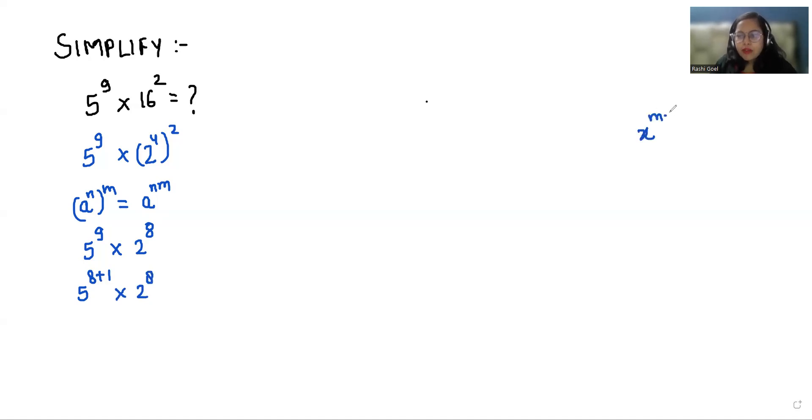Now according to exponent rule x power m plus n we can write it as x power m times x power n. So 5 power 8 times 5 times 2 power 8.